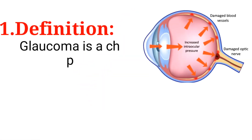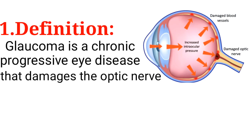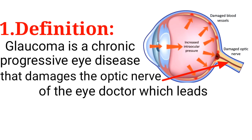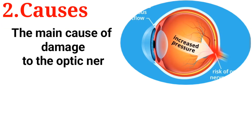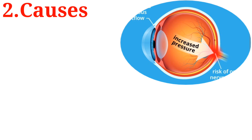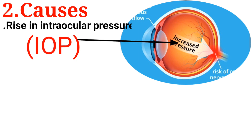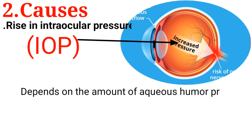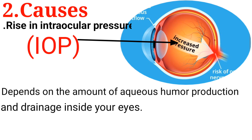Glaucoma is a chronic progressive eye disease that damages the optic nerve of the eye, which leads to visual field loss. The main cause of damage to the optic nerve resulting in glaucoma is rising intraocular pressure, or IOP, which essentially depends on the amount of aqueous humor production and drainage inside your eyes.